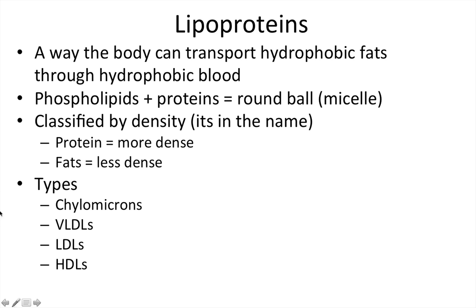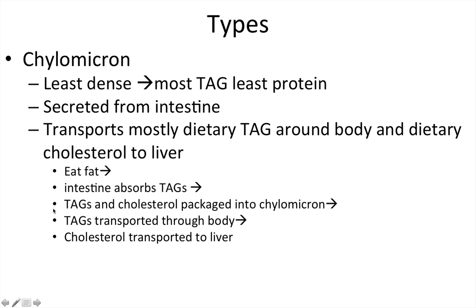There are a few different types: chylomicrons, VLDLs, LDLs, and HDLs. Most questions come from chylomicrons, LDLs, or HDLs — and most often from LDLs. Chylomicrons are the least dense, so this is one we have to remember because the name doesn't tell us the density. They have the most fat content, the most TAG, and the least protein, and they are secreted from the intestines.